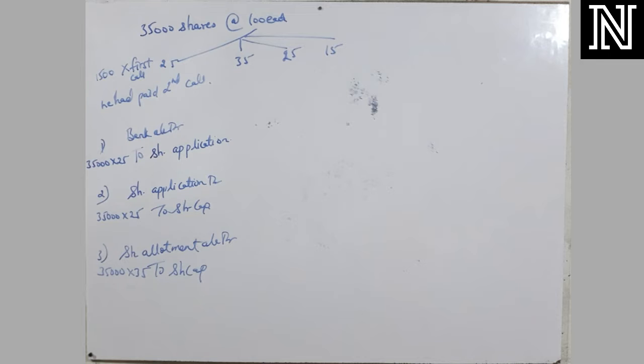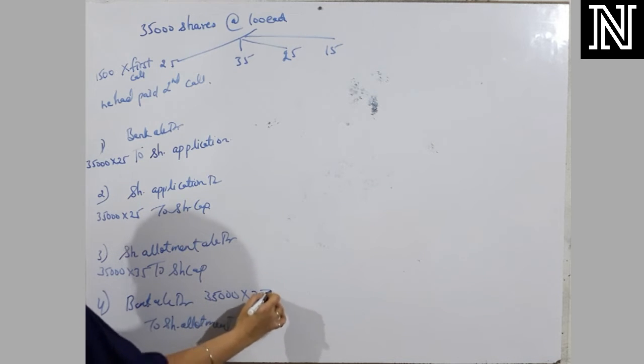Yes, ma'am. Then fourth entry, what will be? Fourth entry, bank account debit to share allotment. Same amount will be going to come 35,000 into 35. Up till these four entries, no confusion to anyone. Is it okay? Yes, ma'am.